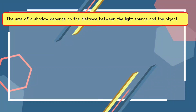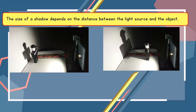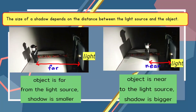The size of a shadow depends on the distance between the light source and the object. When the object is far from the light source, the shadow is smaller. But when the object is near to the light source, the shadow is bigger.